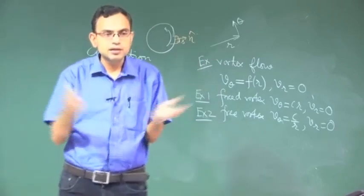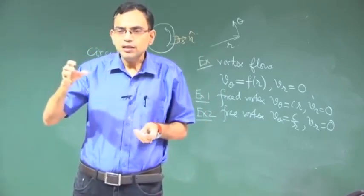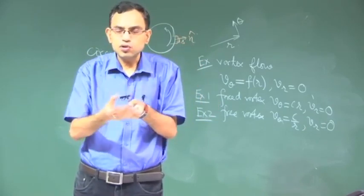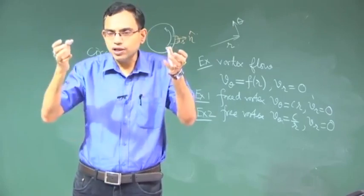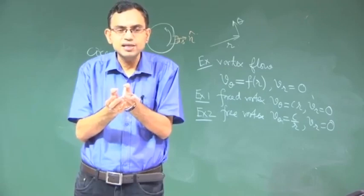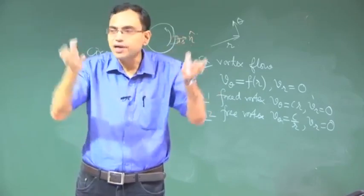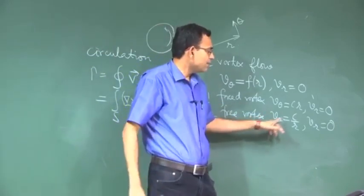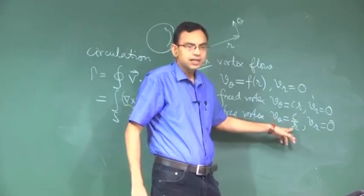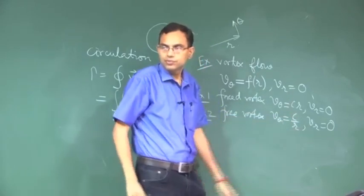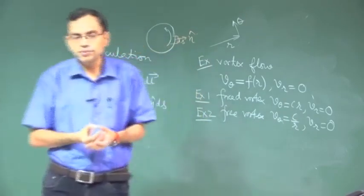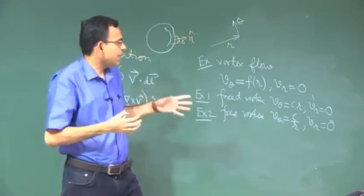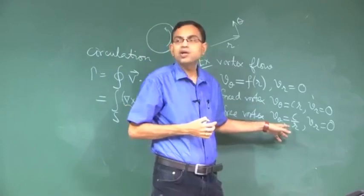For the free vortex, let us assume you have a sink — say a kitchen sink — and you allow tap water to flow through the opening of the sink. You will find that as the water comes close to the center or the axis it is moving very fast, getting drained out very fast. That means v theta literally tends to infinity as r tends to zero. This kind of flow is called free vortex flow, and typically these are models for irrotational flow.